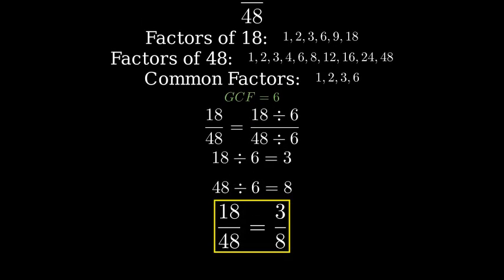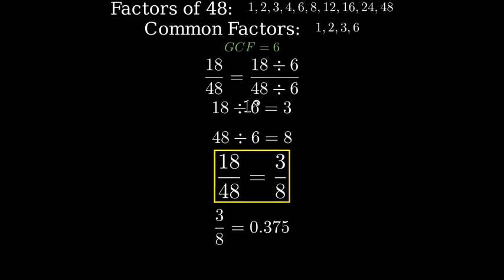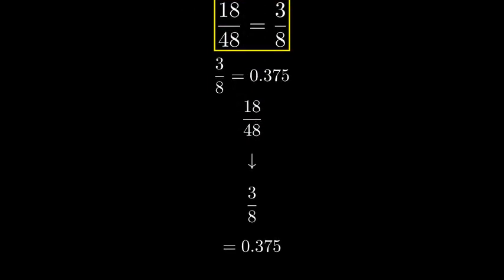Therefore, 18 over 48 simplifies to 3 over 8. As a decimal, 3 over 8 equals 0.375. And that's how we simplify 18 over 48 to 3 over 8 by finding and dividing by the greatest common factor.